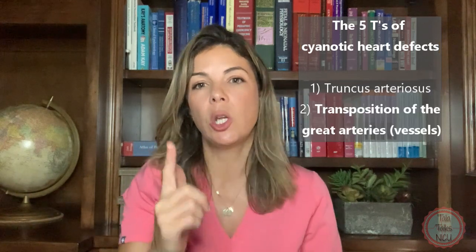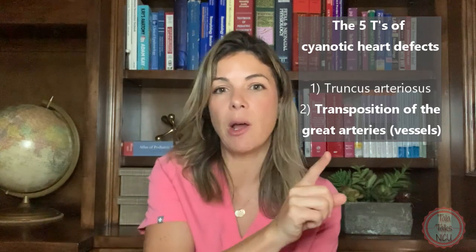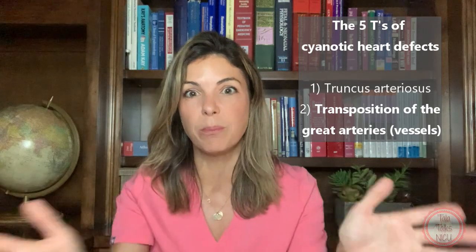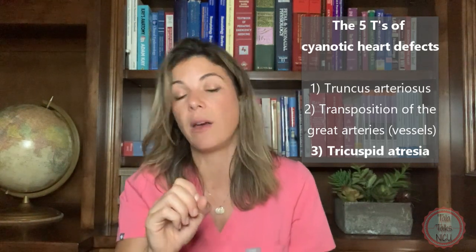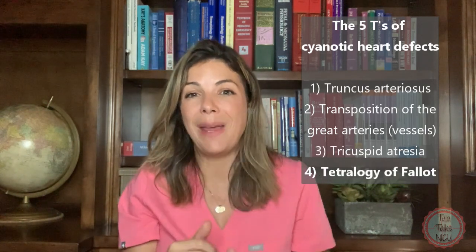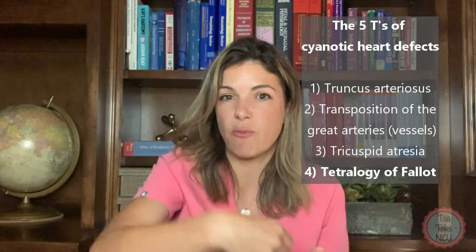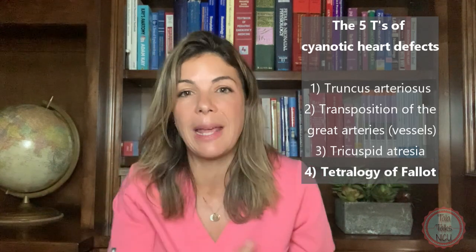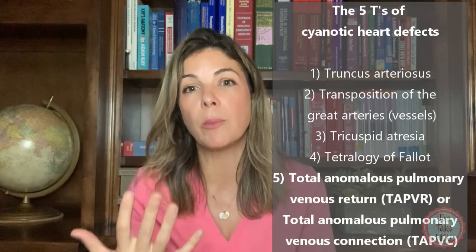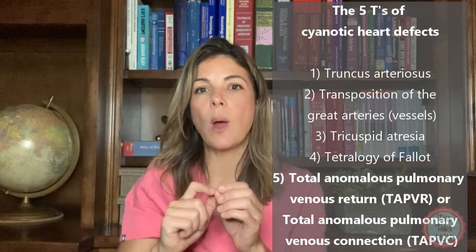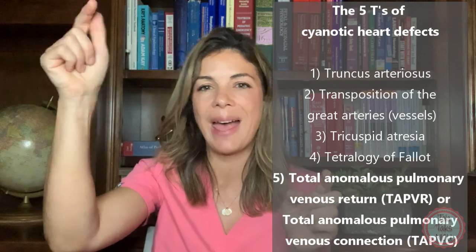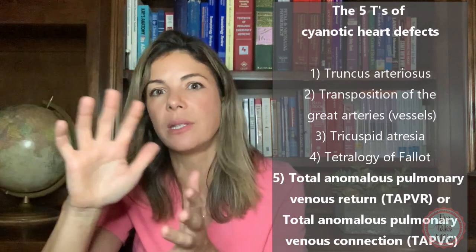One: truncus arteriosus, where basically the pulmonary artery and the aorta are kind of one big trunk leaving the heart. Two: transposition of the great arteries, or great vessels, where the pulmonary artery is coming out of the left ventricle and the aorta is coming out of the right ventricle — you need some mixing to make sure blood is going where it needs to go. Three: tricuspid atresia, where the tricuspid valve is just not made, so blood is forced from the right side of the heart into the left side. Four: tetralogy of Fallot, where there isn't enough blood going to the lungs from the right side of the heart, so the left side becomes more important in getting blood over there. And five: total anomalous pulmonary venous return, also called TAPVR or total anomalous pulmonary venous connection, TAPVC, where the pulmonary veins that should be draining into the left atrium are actually draining into the right atrium — so again, you need a way for blood to get over to the other side.